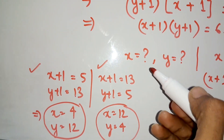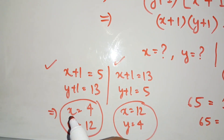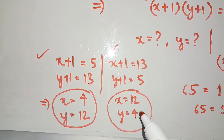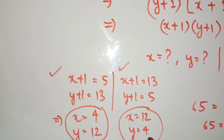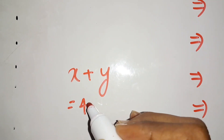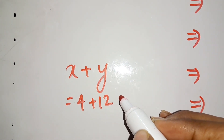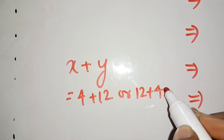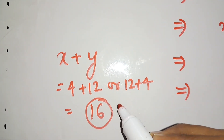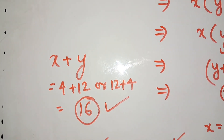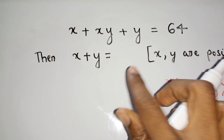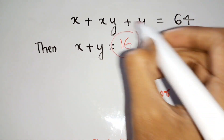Our question asks for x plus y. In the first case, x plus y equals 4 plus 12 equals 16. In the second case, x plus y equals 12 plus 4 equals 16. So in either case, the answer x plus y equals 16.